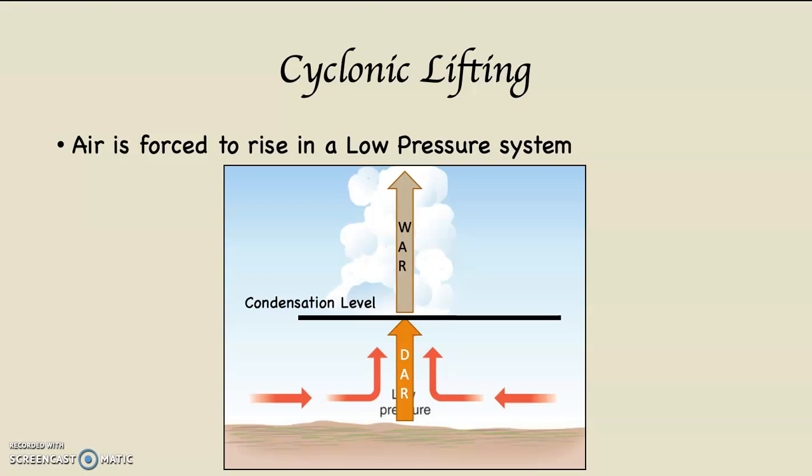If we were going to put the math on this, here's what it would look like. From the ground up to the bottom of the cloud, we would use the DAR. The bottom of the cloud represents the condensation level, and so from the bottom of the cloud up to the top of the cloud, if we were calculating temperature change, we would use the WAR.